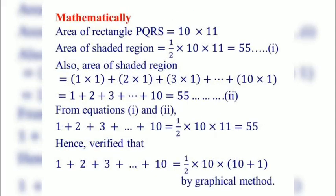Mathematically, we can prove that area of rectangle PQRS is equal to 10 into 11, area of shaded region is half into 10 into 11, that is equal to 55. Also, area of shaded region is 1 into 1 plus 2 into 1 plus 3 into 1 up to 10 into 1, the sum of the areas of each rectangle. That is equal to 1 plus 2 plus 3 up to plus 10, which equals 55.